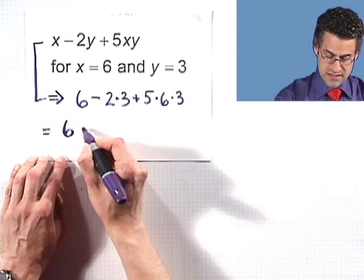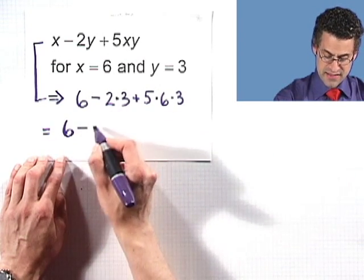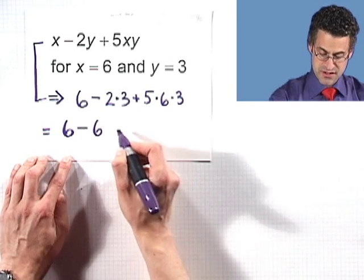And so that's going to be six minus, and that's a six. Oh, that's great. Six minus six, that's pretty easy. That's just zero.